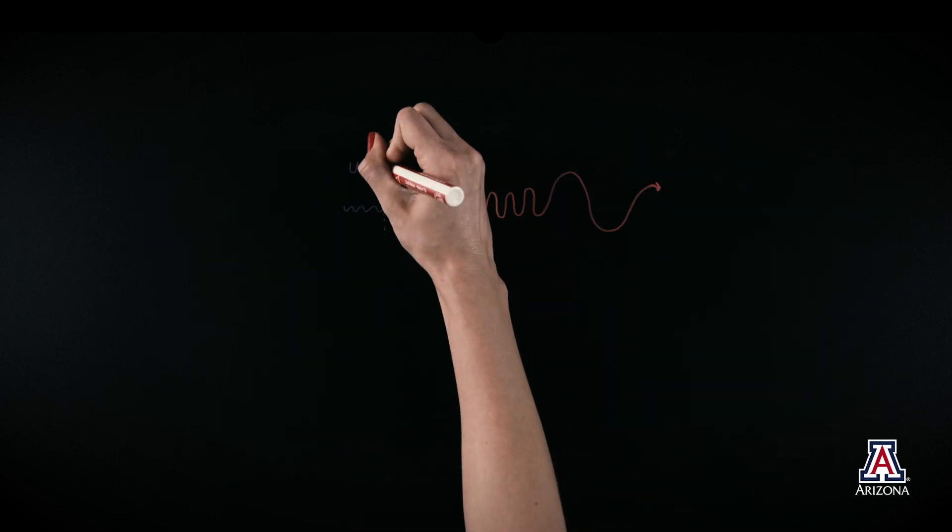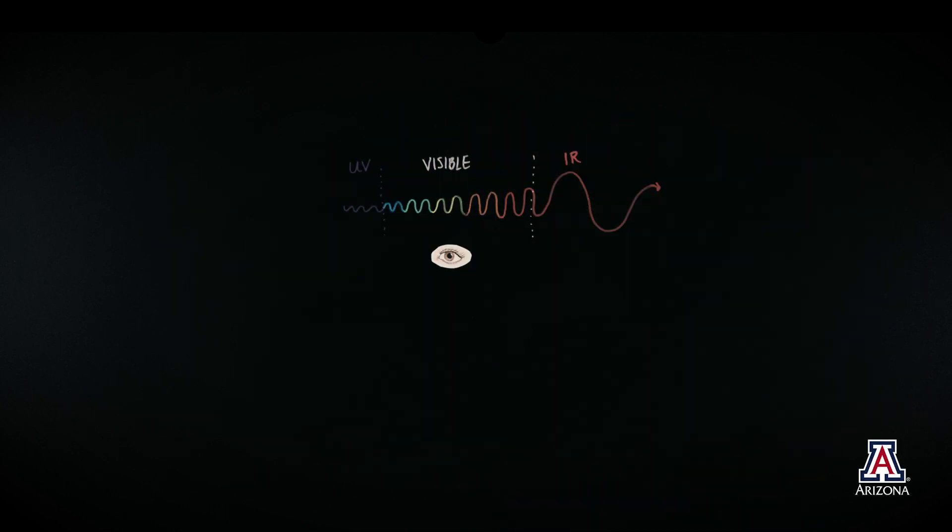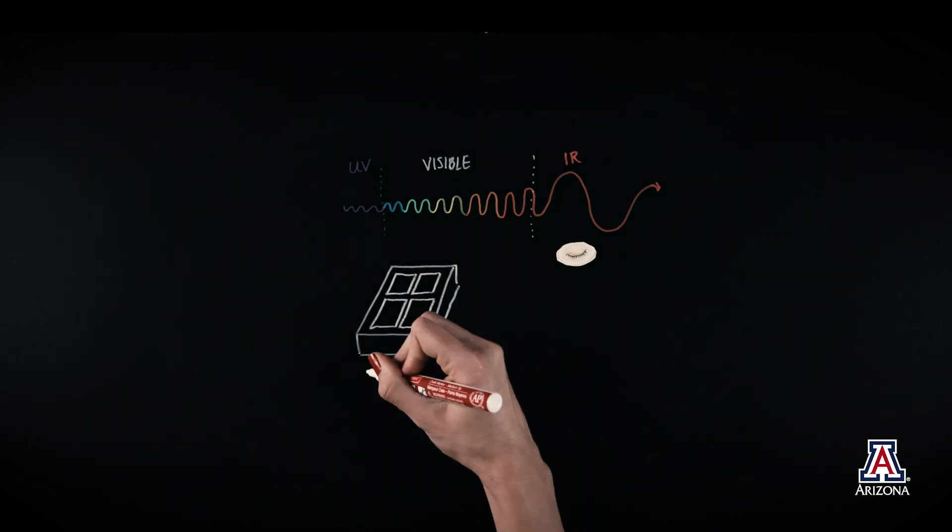Infrared is a type of light with wavelengths longer than visible light. Infrared is invisible to us, but scientists can build instruments that detect it.